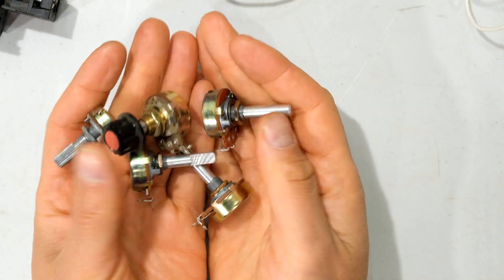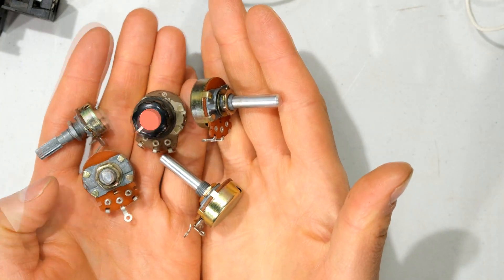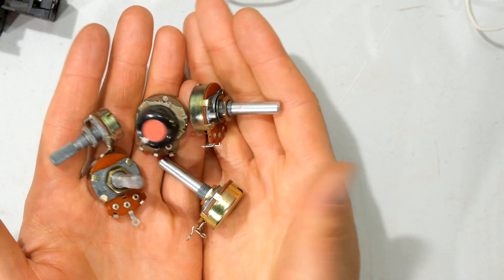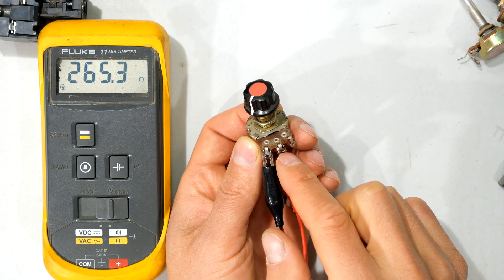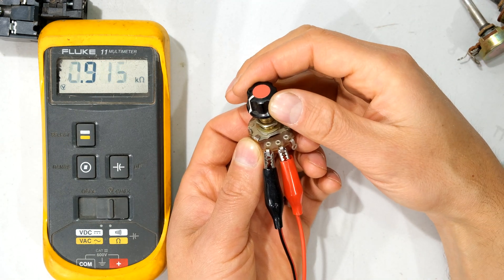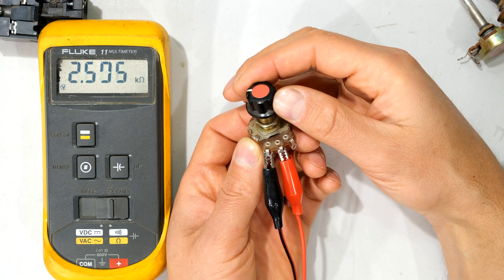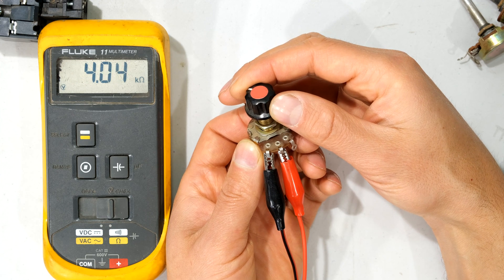Now over here I've got what may look like a rotary switch, but these are called variable resistors. These are also called potentiometers. Notice that I've connected my meter. My meter is now set to ohms, and when I rotate this knob, notice how the resistance is varying.